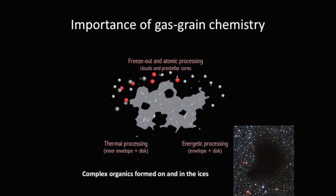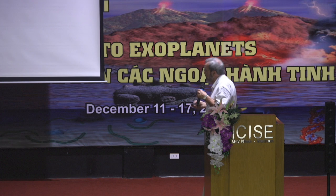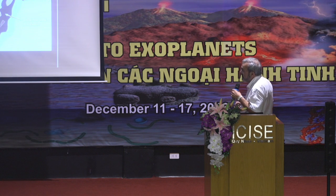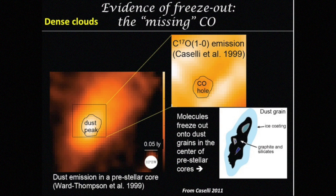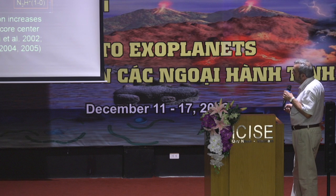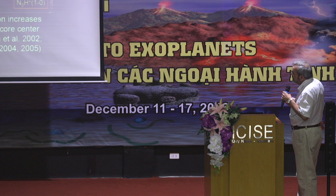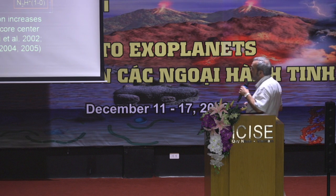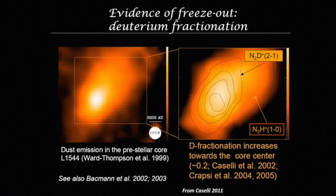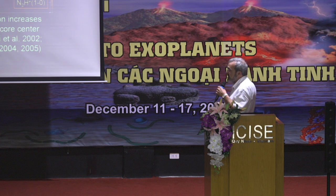As the molecules go to the dust grains, there is a very interesting grain surface chemistry produced by hydrogenation of carbon monoxide, producing HCO, formaldehyde, methanol, and other species. Here is another cloud where you clearly see the hole in CO emission surrounding the peak of the dust emission. Something very interesting is that fractionation of deuterated species is extremely high in the region where CO condenses on dust grains.